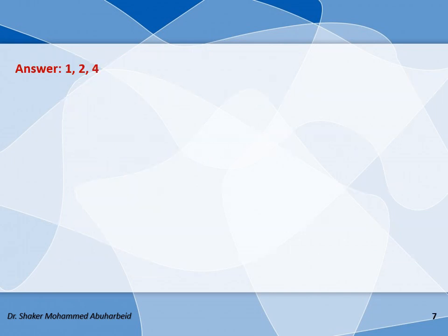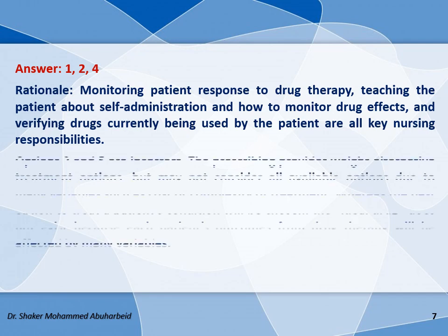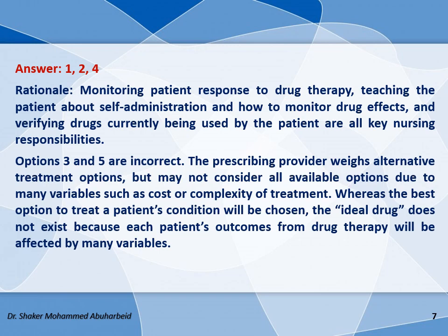The correct answers are options 1, 2, and 4: monitoring patient response to drug therapy, teaching the patient about self-administration and how to monitor drug effects, and verifying drugs currently being used by the patient are all key nursing responsibilities. Options 3 and 5 are incorrect. The provider may consider alternative treatment options but not all available options due to variables such as goals or complexity of treatment. The ideal drug does not exist because each patient's outcomes from drug therapy are affected by many variables.